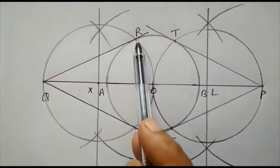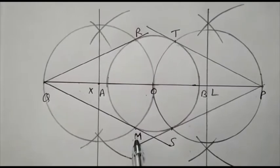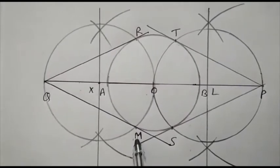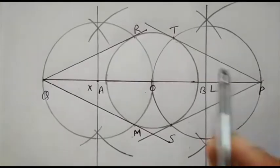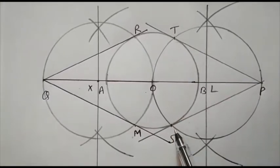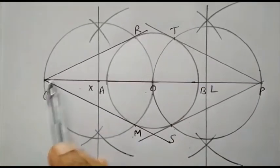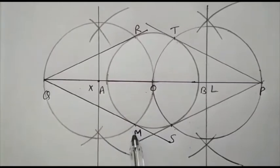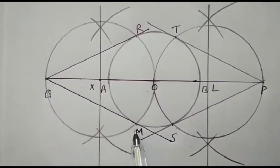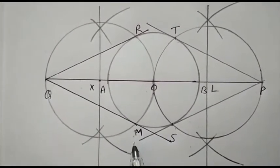Now join QR and QM. In this way, we have two pair of tangents. From point P, PT and PS are tangents. From point Q, QR and QM are tangents. And procedure to draw tangents is same.